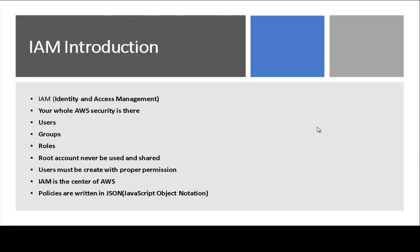First, IAM introduction. IAM stands for Identity and Access Management. Your whole AWS security is managed through IAM. There are users, groups, and roles in IAM. You can create users, add users into groups, and manage roles - you can assign which user can access which kind of resources using IAM. Keep in mind, the root account should never be used or shared with anyone. Users must be created with proper permissions.